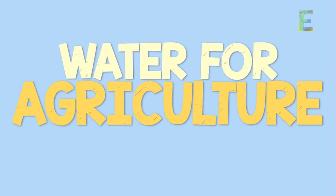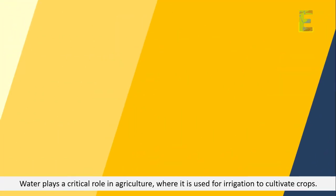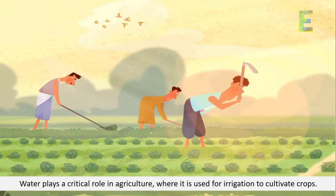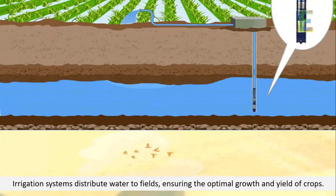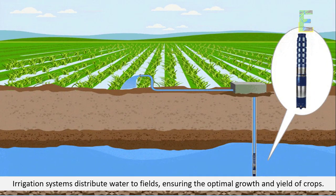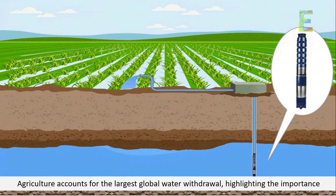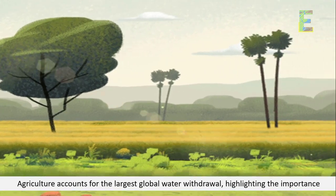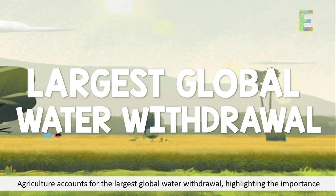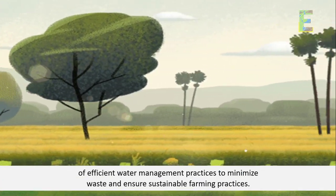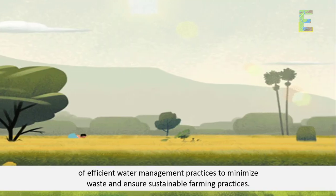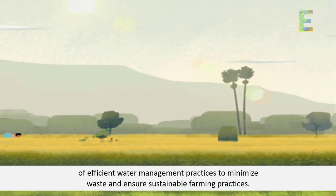Water for Agriculture. Water plays a critical role in agriculture, where it is used for irrigation to cultivate crops. Irrigation systems distribute water to fields, ensuring the optimal growth and yield of crops. Agriculture accounts for the largest global water withdrawal, highlighting the importance of efficient water management practices to minimize waste and ensure sustainable farming.